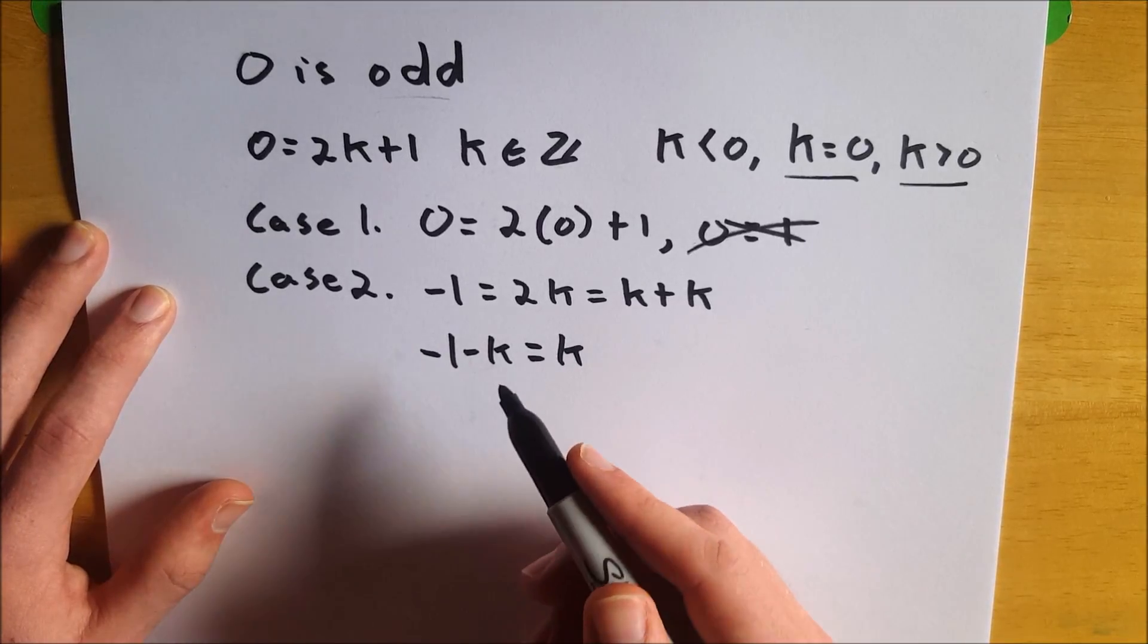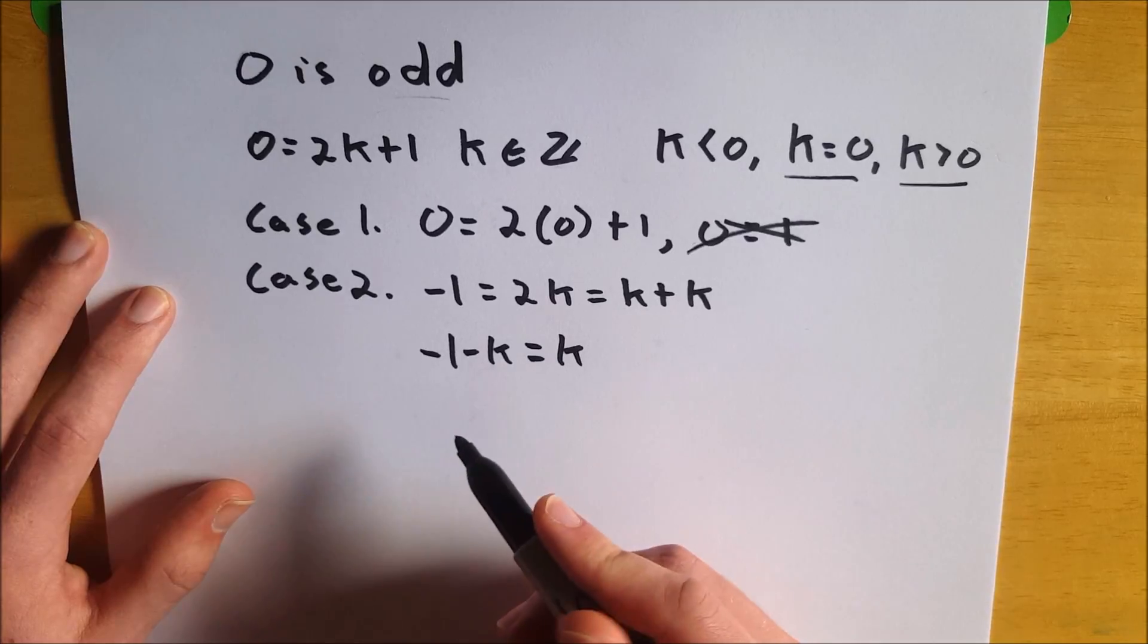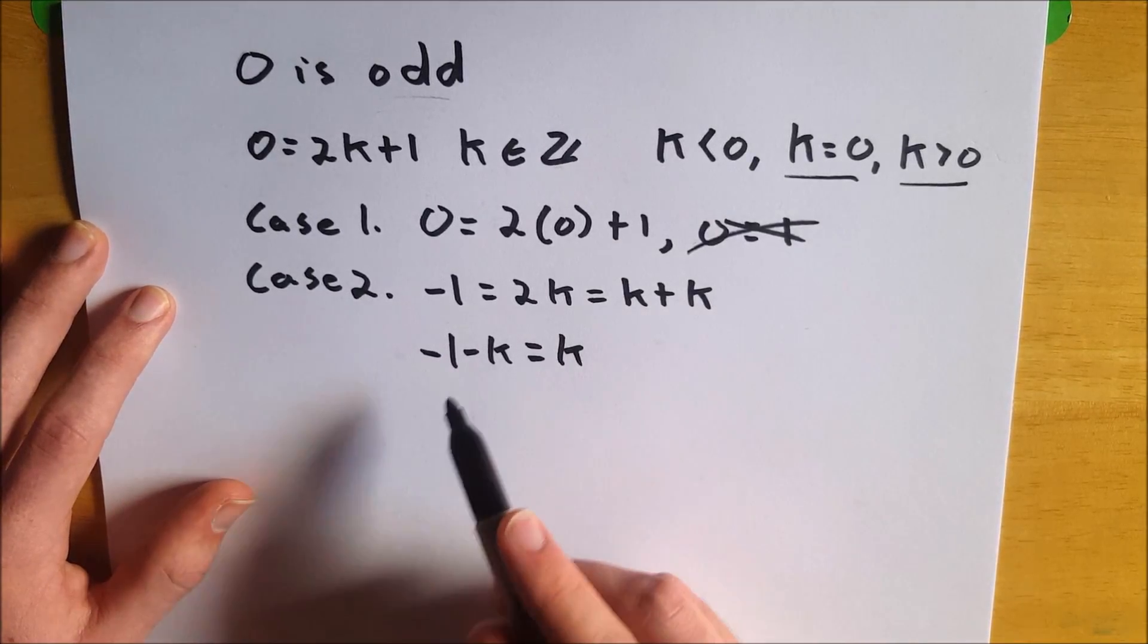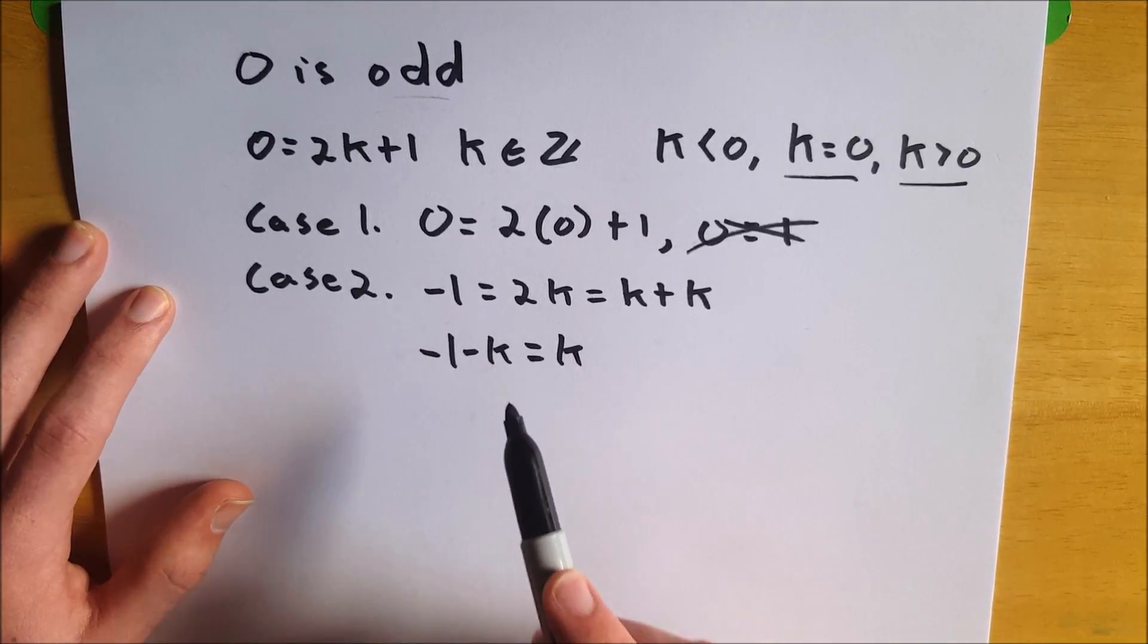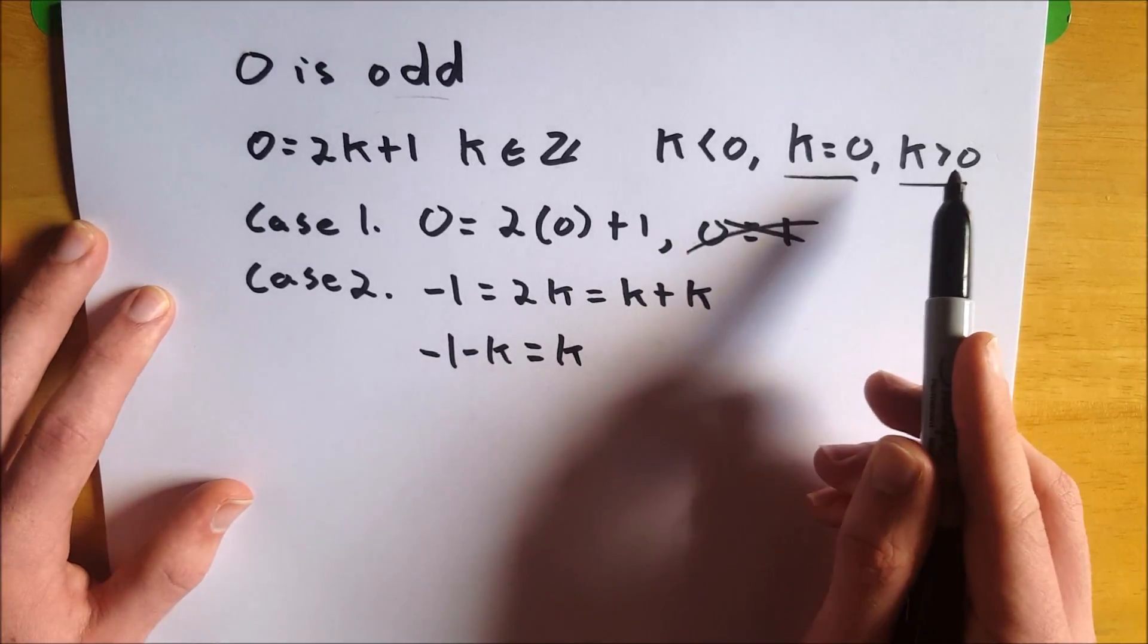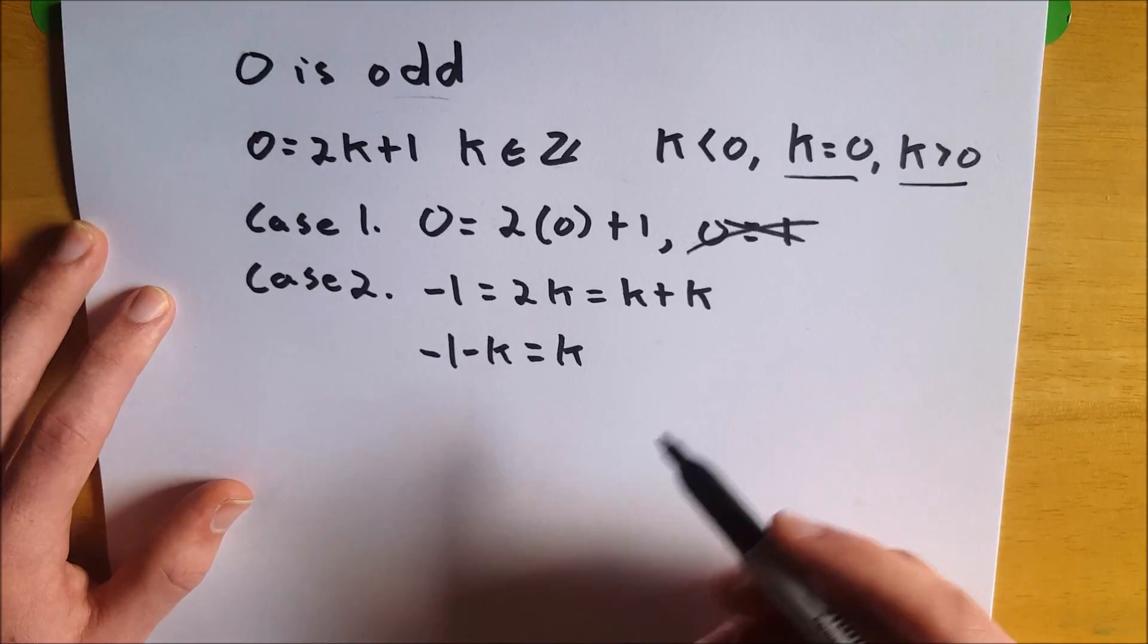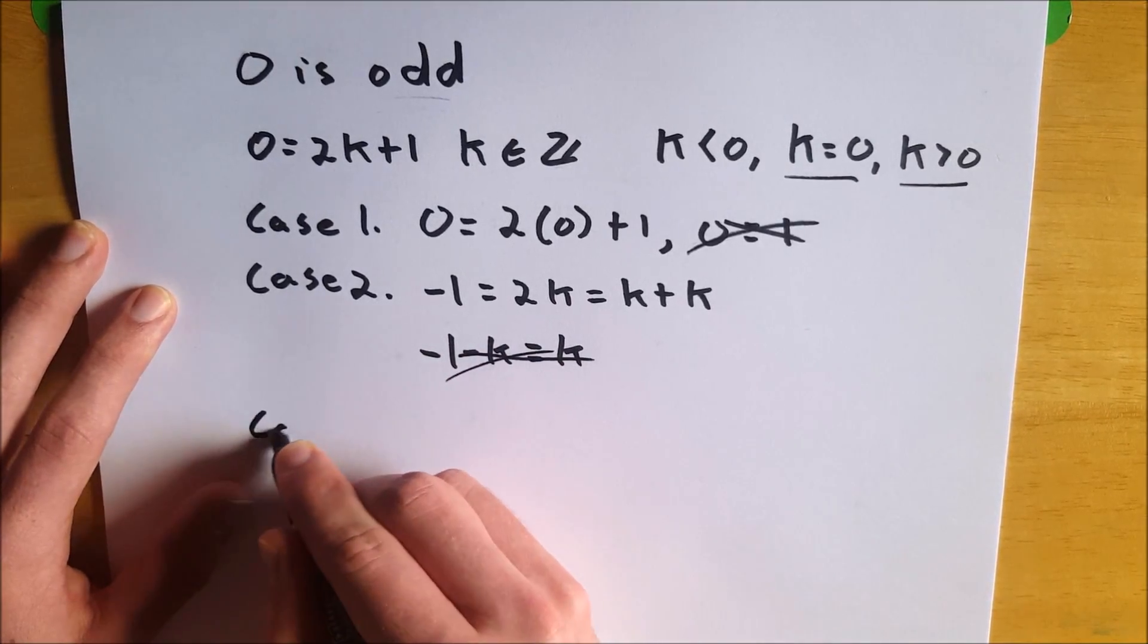So if k is positive, a positive integer, then negative one minus k is going to be negative, right? Because you're taking more value away from this negative one. So it's going to be a negative integer, but it's going to be equal to a positive integer because k in this case is positive. A negative number minus a positive number is negative. So we've got another contradiction there.